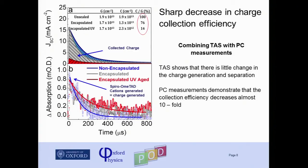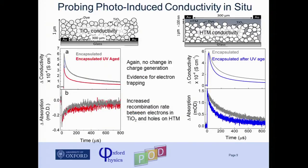It's not that surprising that TiO2-based cells suffer under UV light, but it hadn't been really addressed. If there's a problem in charge collection, two things could happen: rapidly increased recombination rates, or much worse charge transport. To distinguish between them, especially in this complex system with electron transport through TiO2 and hole transport through the hole transporter, we split up the components into individual devices.